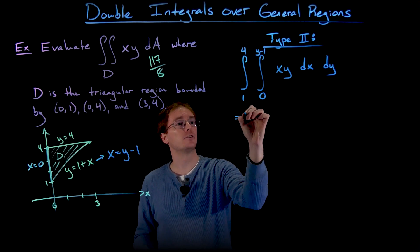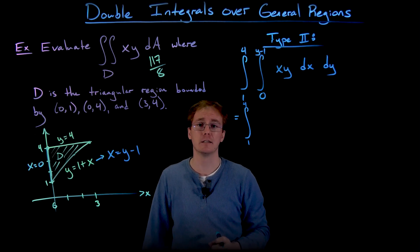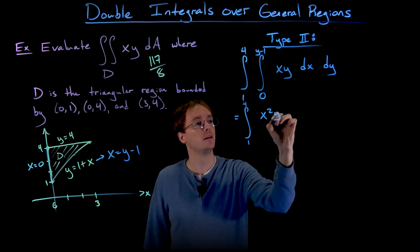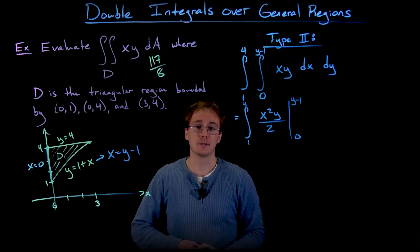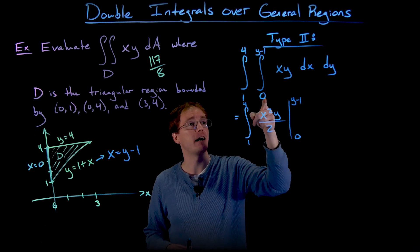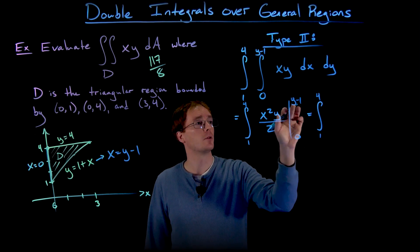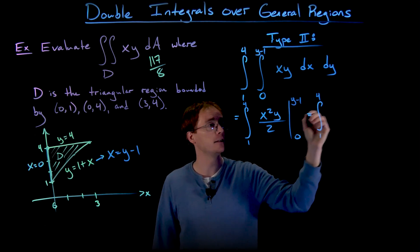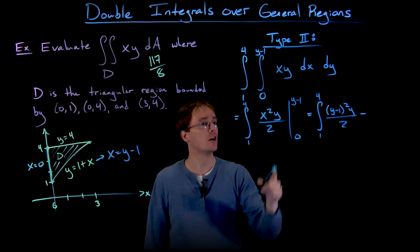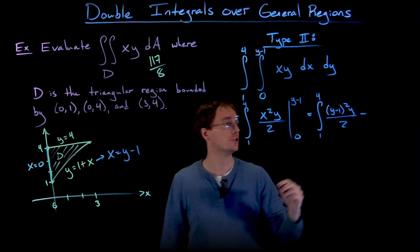Now we evaluate, working from the inside out. The antiderivative with respect to x is x squared times y over 2. Evaluating at the upper limit x equals y minus 1 gives (y minus 1) squared times y over 2. Subtracting the antiderivative at x equals 0 gives zero, so we're left with (y minus 1) squared times y over 2.